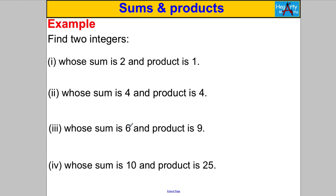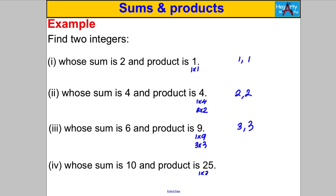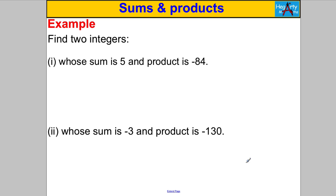Product of 1 and sum of 2: the only integers that multiply to 1 are 1 and 1, and they add up to 2. Product of 4 and sum of 4: 1×4 and 2×2 — only 2 and 2 add up to 4. Sum of 6 and product of 9: factors of 9 are 1×9 and 3×3 — and 3+3=6. Sum of 10 and product of 25: factors of 25 are 1×25 and 5×5 — and 5+5=10. Sometimes the answer is a repeated number.